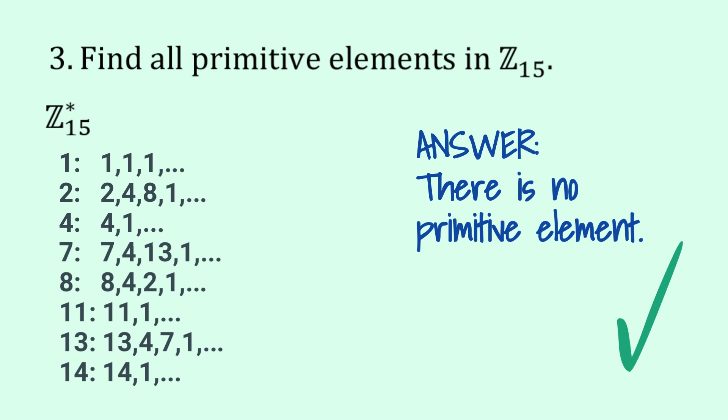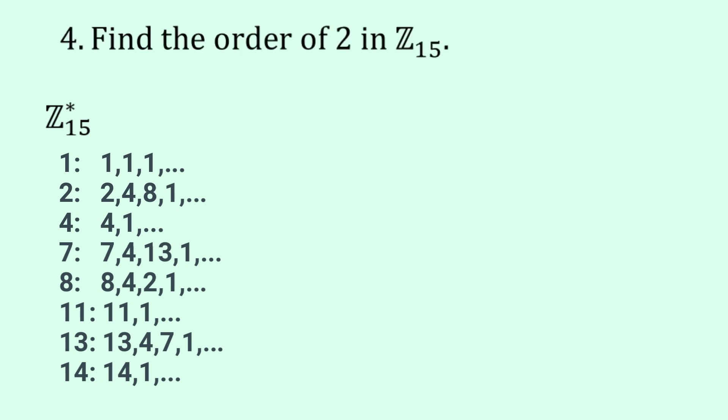OK, now let's go on to the fourth question. What's the order of 2 in Z 15? So we could just follow the same sort of idea as when we were doing the earlier question involving order. So we go down to the column, the row involving 2, and we can see there that the smallest power of 2 that gives us a 1 is 4.